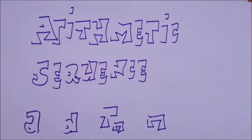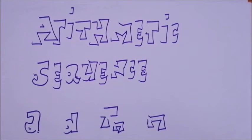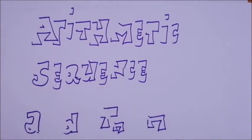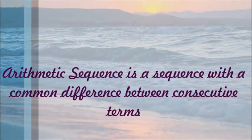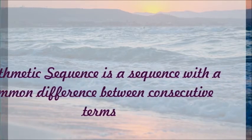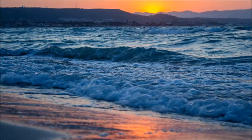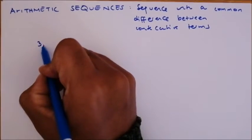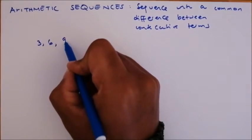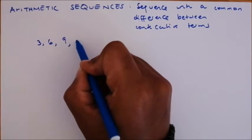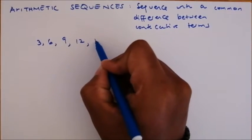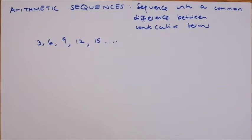Hello everyone, welcome to Academic Coordinates. This is an introductory video to the sequencing series for grade 12. Specifically, we are looking at arithmetic sequences — sometimes referred to as linear sequences — which are sequences with a common difference between consecutive terms. For example: 3, 6, 9, 12, 15.